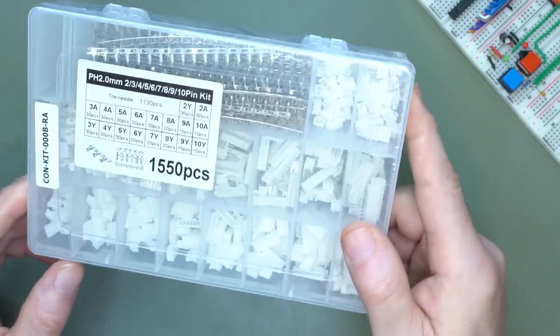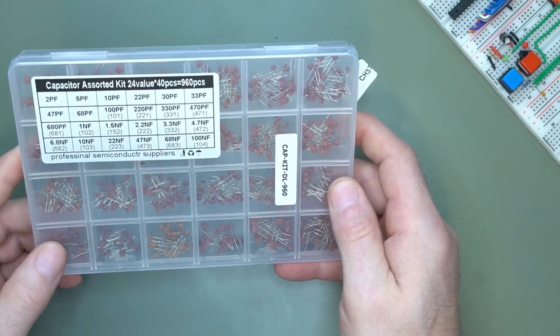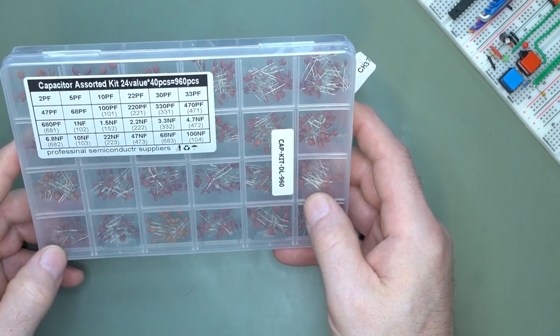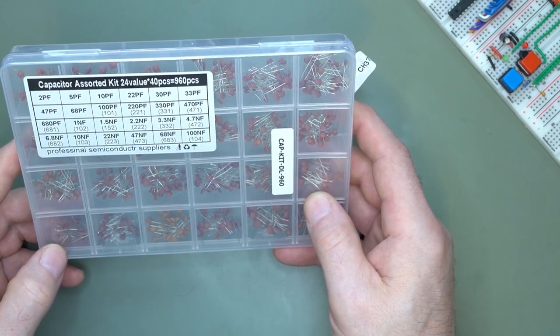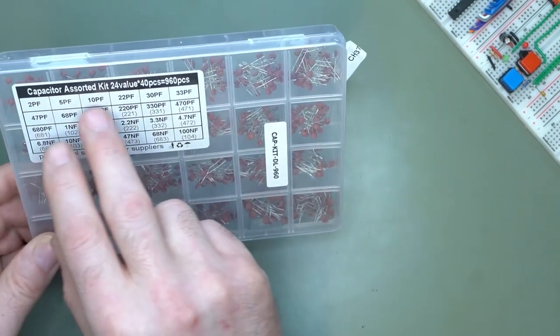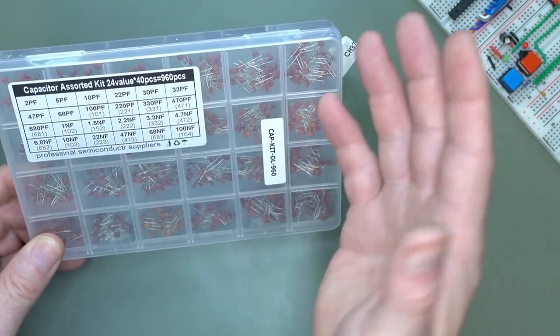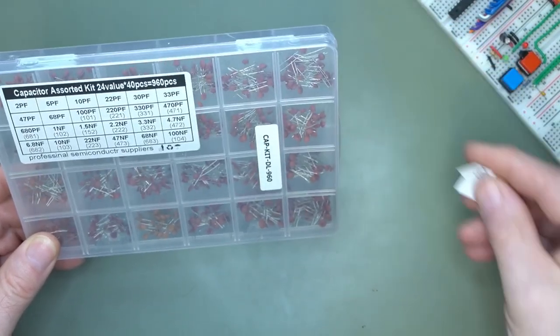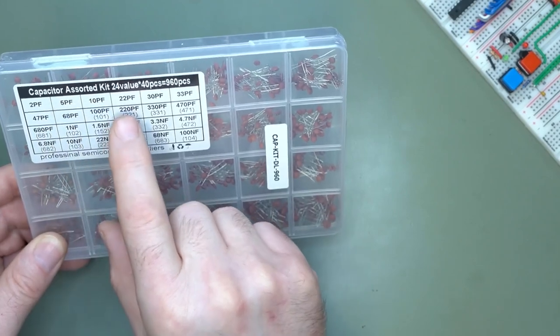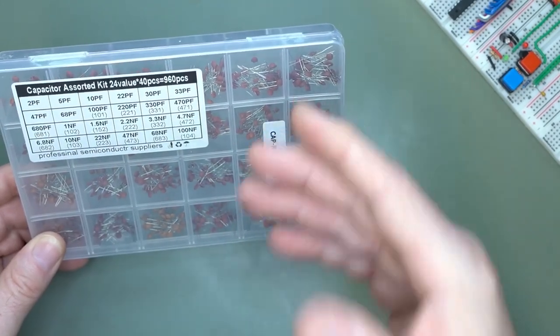I've got another kit here which is a capacitor kit, mostly small values, which is good because I don't have a lot of the small ones. It's 960 pieces, great because you have small ones that you don't normally have. If you don't have a kit, basically you don't go and buy a 2 picofarad one.